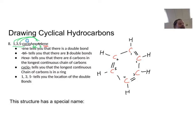It could be redrawn like this. And that is basically the same thing. But it's 1,3,5-cyclohexatriene because it made some type of a ring. This structure happens to have a very special name. That special name is benzene.